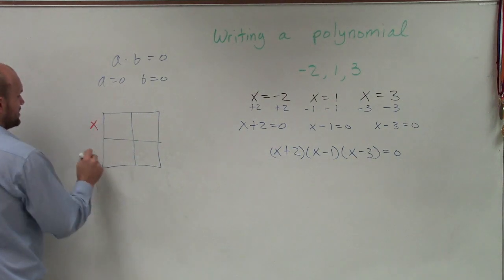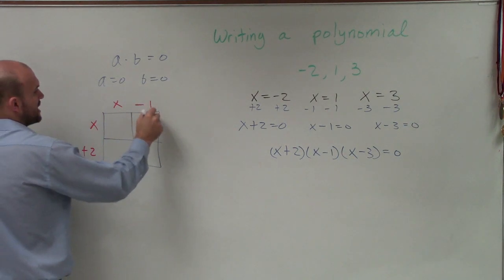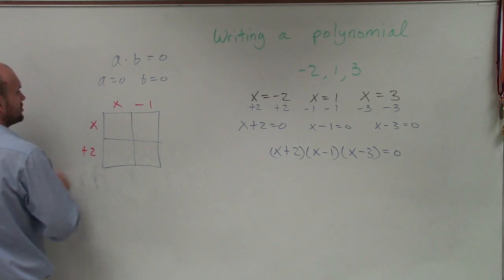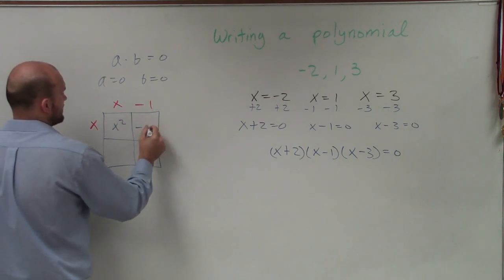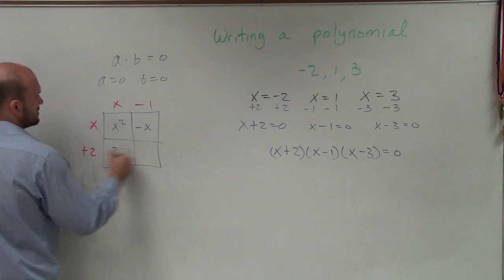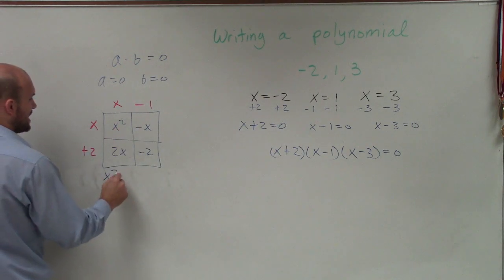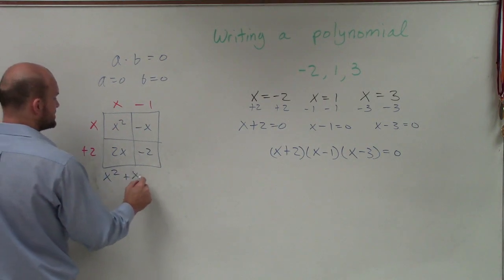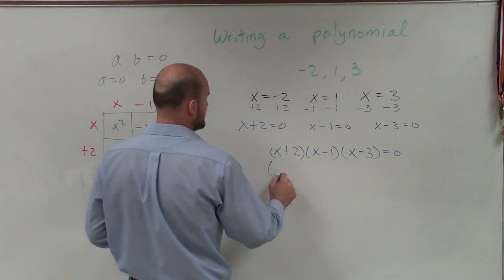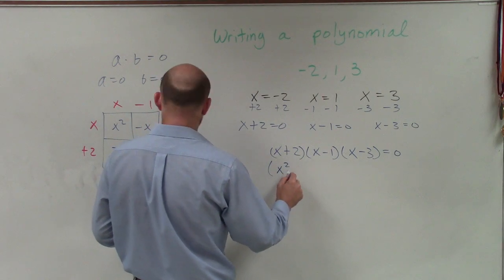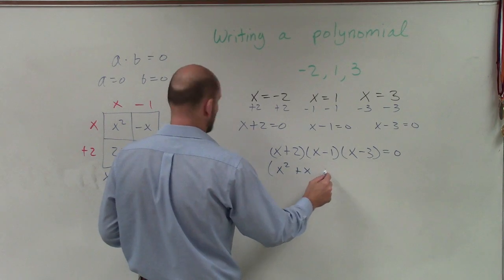I'll put one binomial on the side and the other on top, then multiply through using the box method. x times x is x squared, negative x, 2x, and negative 2. Combining like terms gives me x squared plus x minus 2. So when I multiply my first two binomials, I get x squared plus x minus 2.